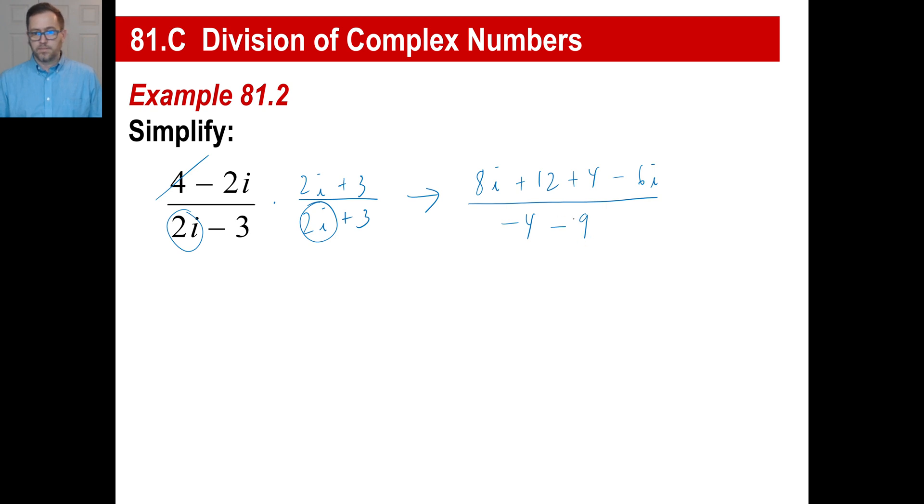So on top, we've got 12 plus 4, 16. We've got 8i minus 6i. That's 2i. And on the bottom, we've got negative 13. And again, don't forget, the format you're going to see this in is 16 over 13. And a positive divided by a negative is a negative. So negative 16 thirteenths. And then a positive divided by a negative is also a negative. So negative 2 thirteenths i. That's what you're going to see as an answer. And that's all you can do.